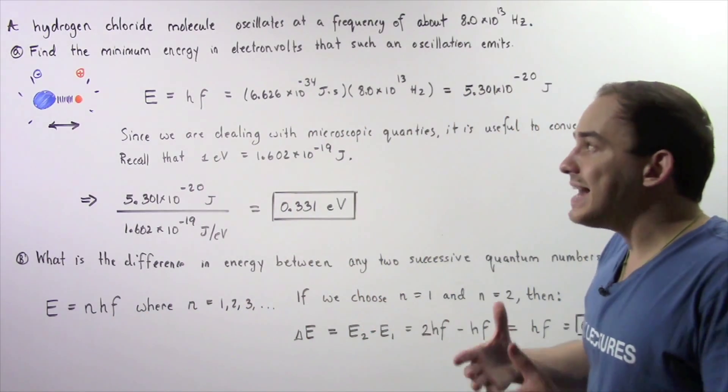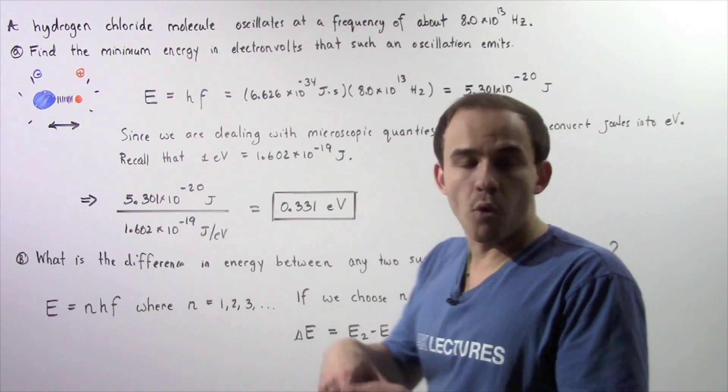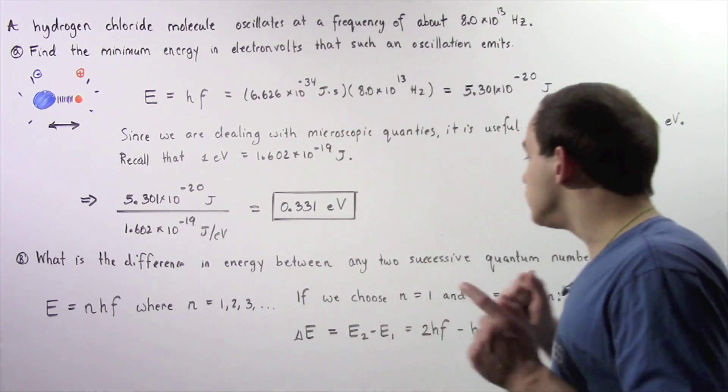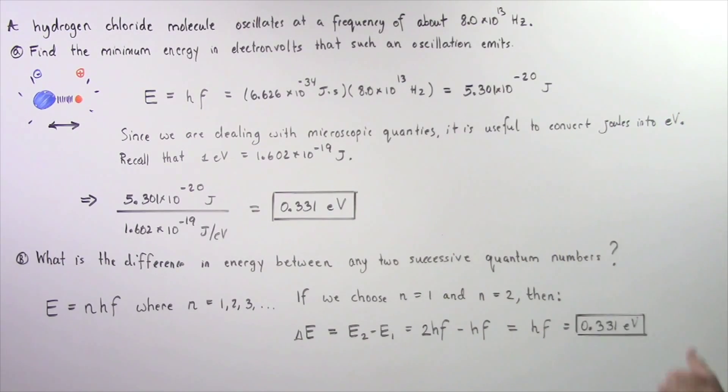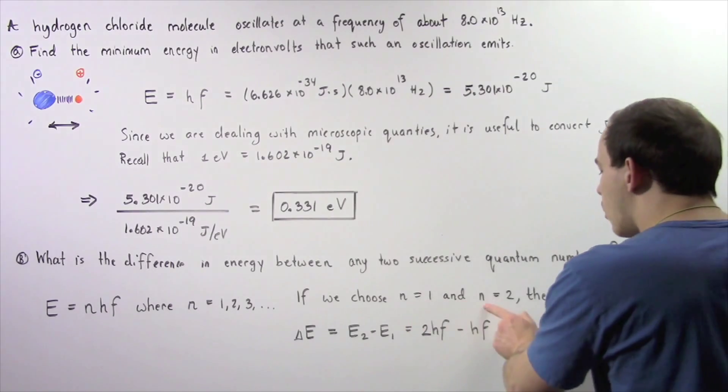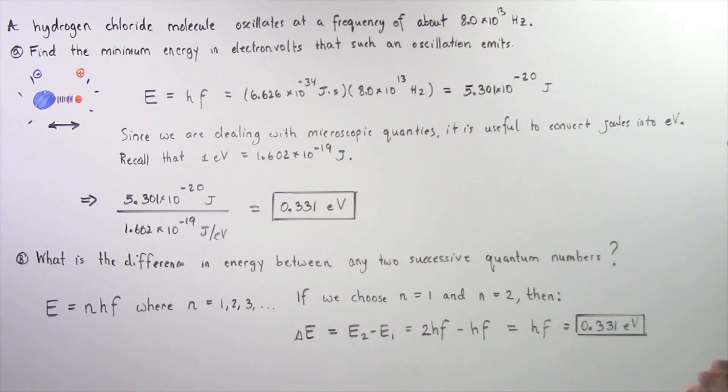Now, N could be any positive integer. It could be 1, 2, 3, 4, and so on. Now, we're looking for any two successive quantum numbers. So, let's suppose we choose N equals 1, and N equals 2.